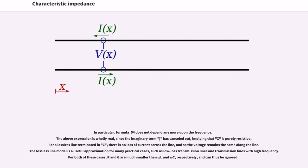In particular, Formula 54 does not depend any more upon the frequency. The above expression is wholly real, since the imaginary term j has cancelled out, implying that Z is purely resistive. For a lossless line terminated in Z₀, there is no loss of current across the line, and so the voltage remains the same along the line. The lossless line model is a useful approximation for many practical cases, such as low loss transmission lines and transmission lines with high frequency. For both of these cases, R and G are much smaller than ωL and ωC, respectively, and can thus be ignored.